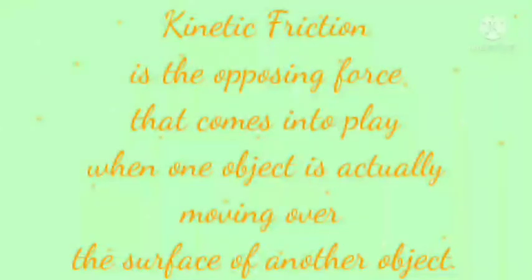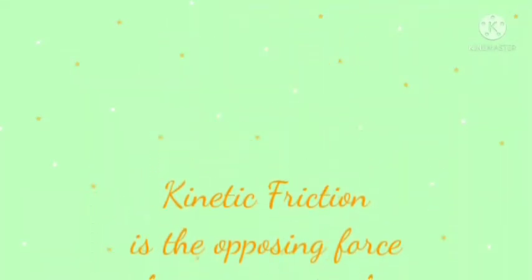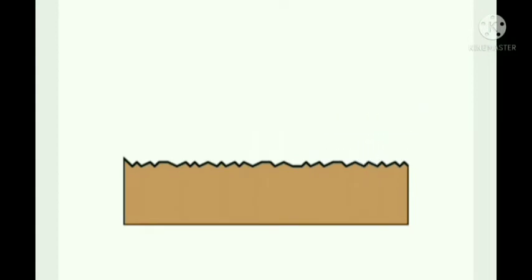Third is kinetic friction. Kinetic friction is the opposing force that comes into play when one object is actually moving over the surface of another object. Anything that rubs, slides, or slips has some kinetic friction. Any surface that moves against another surface has kinetic friction.